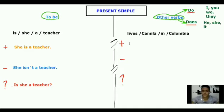People, let's continue. So the second sentence we have lives Camila in Colombia. Let's put this sentence in positive. Ten seconds to organize the sentence. Let's start right now. Okay very good, so the positive is Camila lives in Colombia.